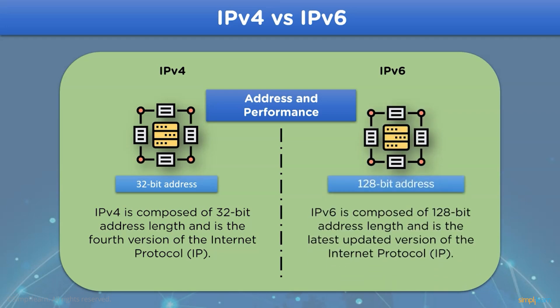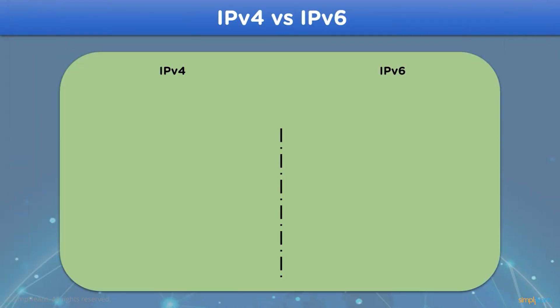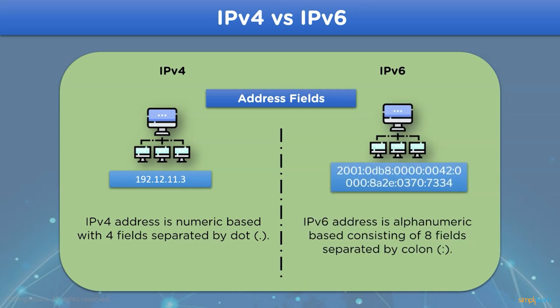For IPv6, the address size is 128-bit long, and is the latest version of the Internet Protocol. The second difference is on the basis of address field type. IPv4 addresses are based on numeric data with four fields each separated by a period, whereas IPv6 addresses are based on alphanumeric type data with eight fields each separated by a colon.